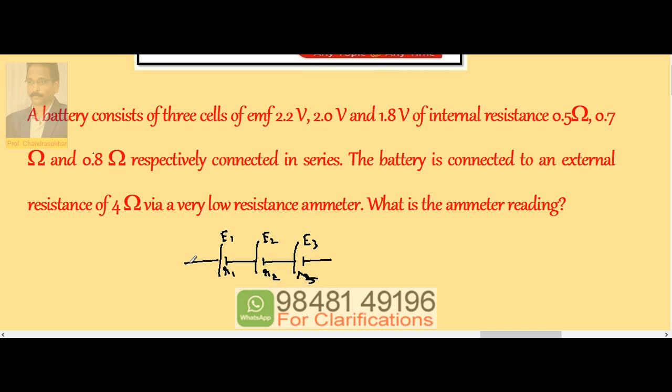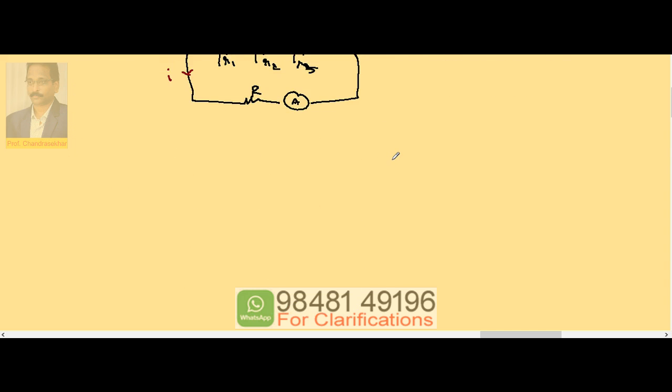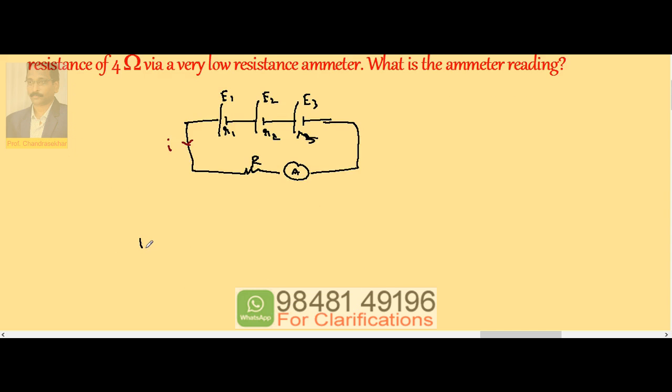Now this combination is connected to a resistance of 4 ohms and an ammeter. So let us say R. Let I be the current through the circuit. We know that when cells are connected in series, the current through the circuit I is given by total EMF divided by total resistance.